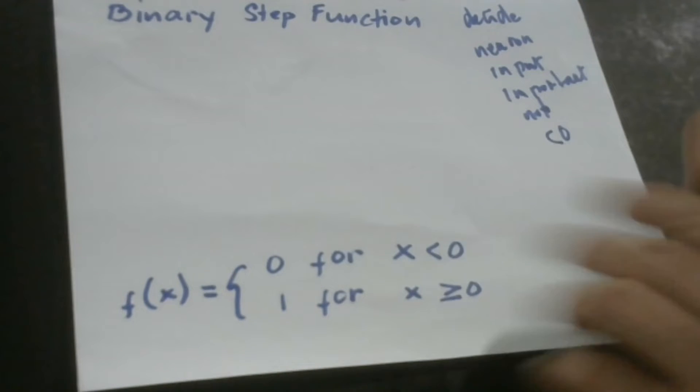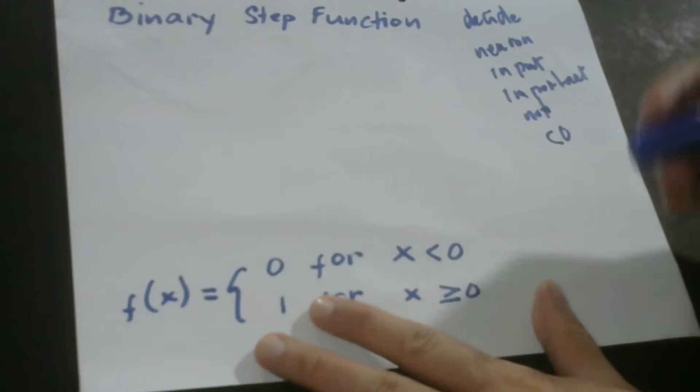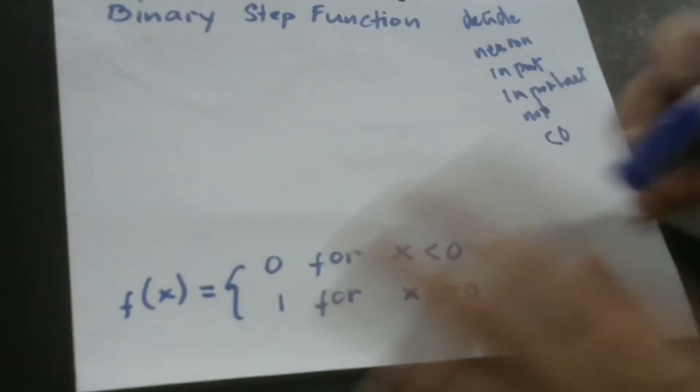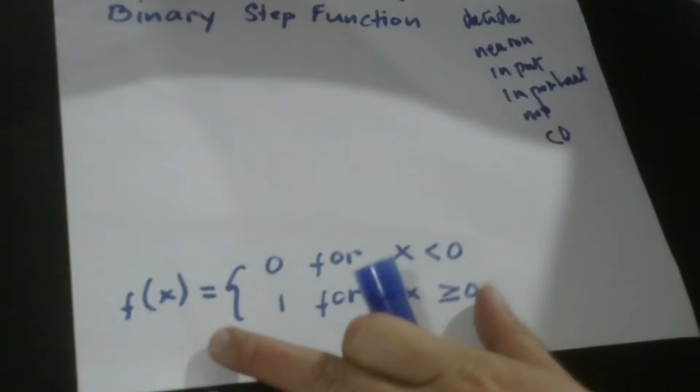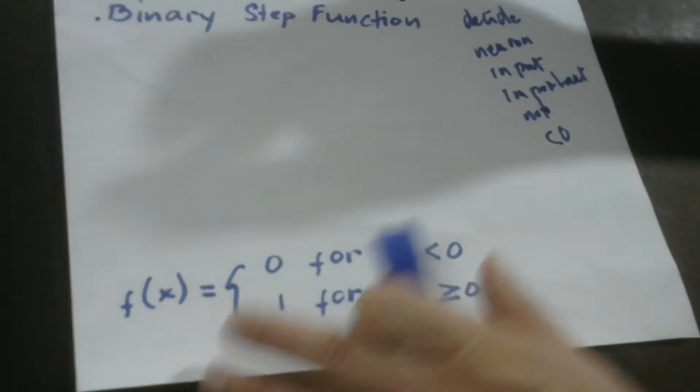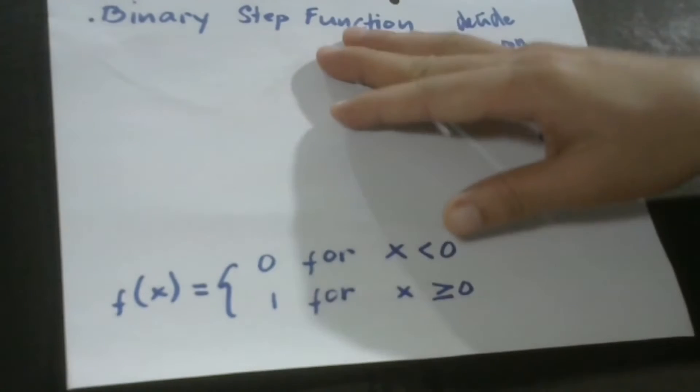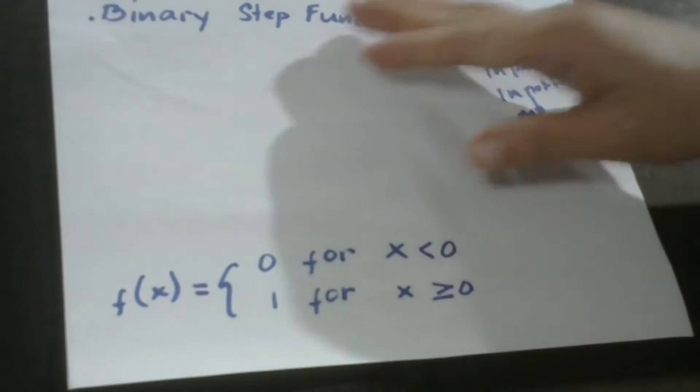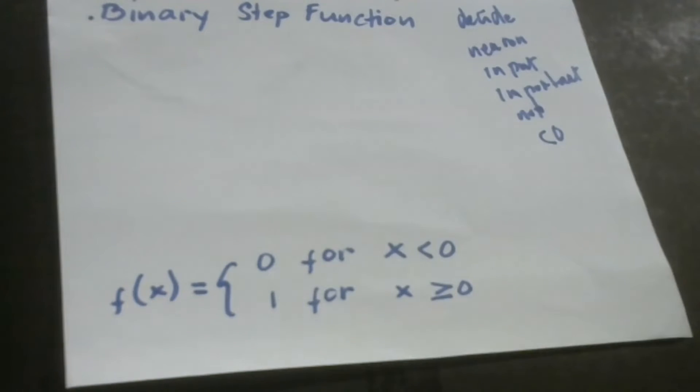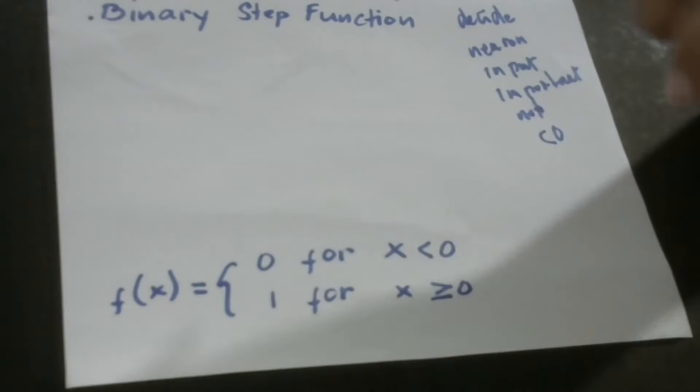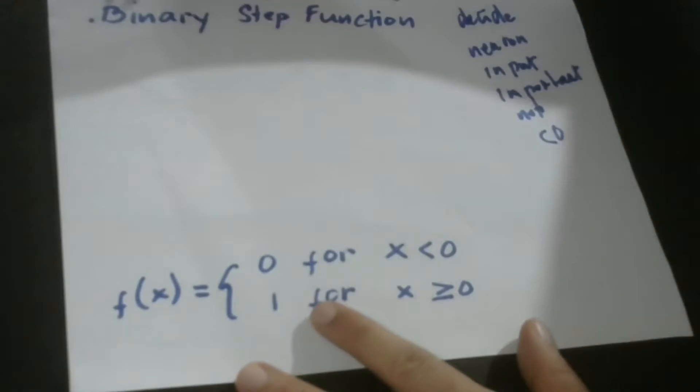There are a lot of Activation Functions when we talk about neural networks, and in this lesson, we're going to study binary step function. Binary step function is actually a basic Activation Function in neural networks. Just by the word binary, I think this gives you a clue what this is all about.